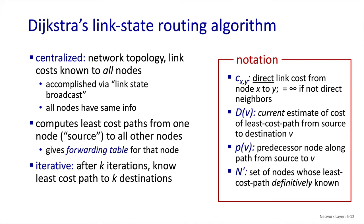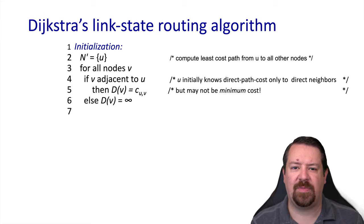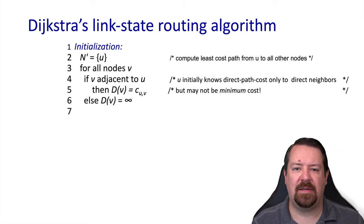We also have the set n' of the nodes to which we definitely know the least cost path. We're using u to represent the router that is running the algorithm, so it will be the source for all the connections, computing the cost to all the possible destinations in the network. Initially, n' only contains u, meaning this router knows the cost to get to itself is zero. It then walks through all the possible destination nodes v. If v is directly connected to u, the cost of the link c(u,v) is used as the distance to v. If v is not directly connected to u, the cost to get to v is infinity — it's not reachable.